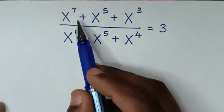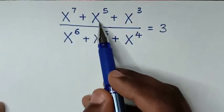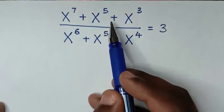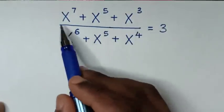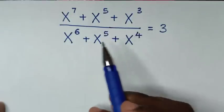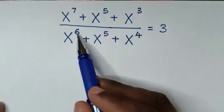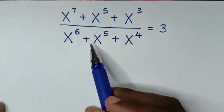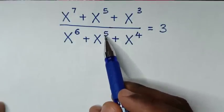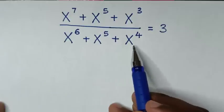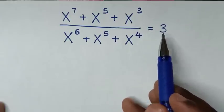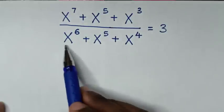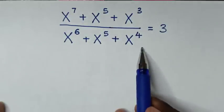How to solve x to the power of 7 plus x to the power of 5 plus x to the power of 3, over x to the power of 6 plus x to the power of 5 plus x to the power of 4, is equal to 3. Find the value of x from this equation.